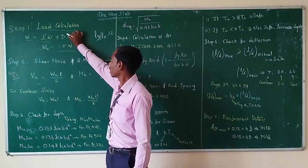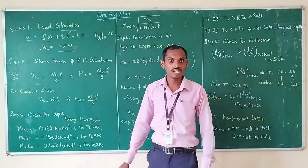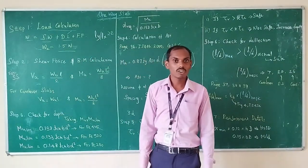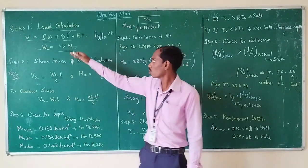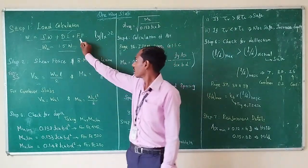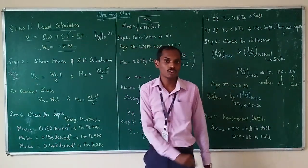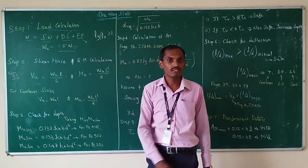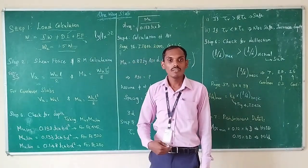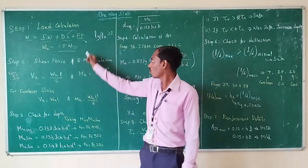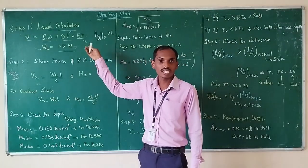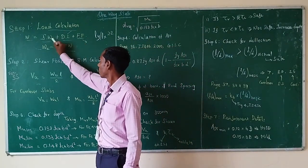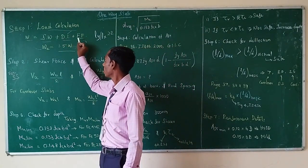The second load component is dead load. If the dead load value is given, take that total dead load. If not given, omit that value. The last load is floor finish load, taken from IS 875 Part 3 based on the finishing of the floor. If floor finish load is given, use that value. The total load is the sum of self-weight, dead load, and floor finish load.